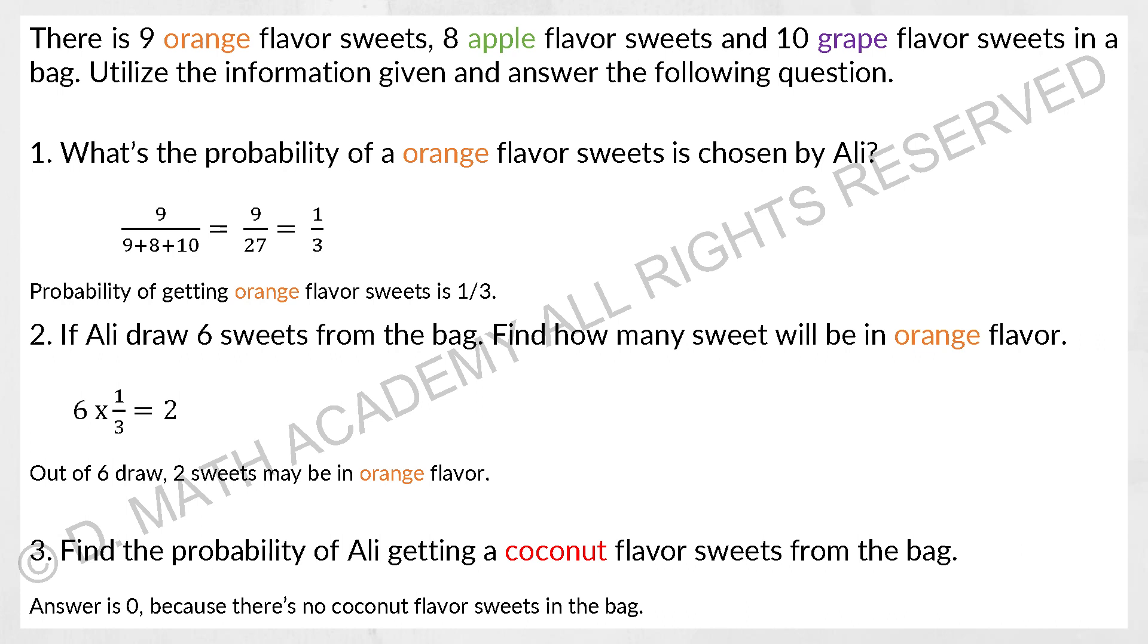So this is the simplest one. Usually we'll get you about one to two marks. So for us to get orange out of the bag, there's nine orange in total over the total sweets inside which is 27. So nine over 27 will get you one over three.